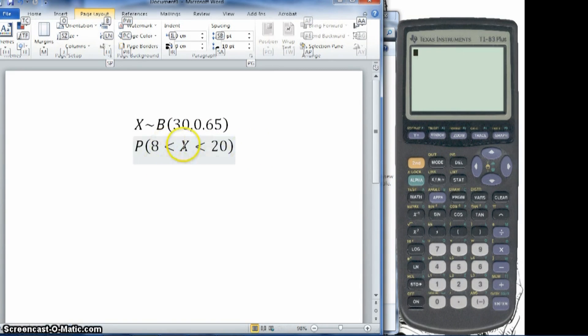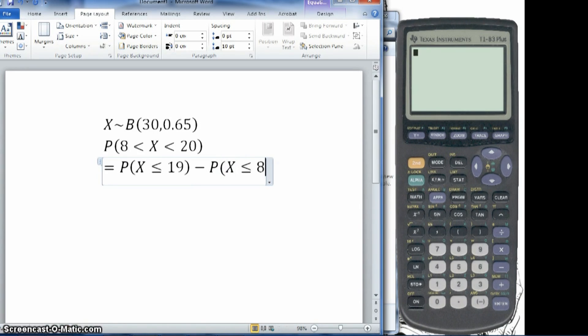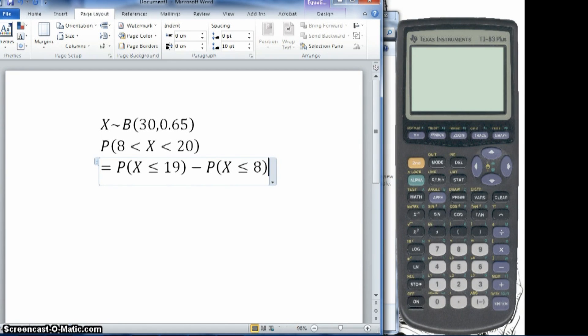And we want to find the probability of X being larger than 8, but less than 20. So first of all, I want to identify that this is equal to the probability of X being less than or equal to 19. So that's from all the way from X is 0 up to 19. And take away the probability of X being less than or equal to 8. Because I want all the values between 9 and 19.